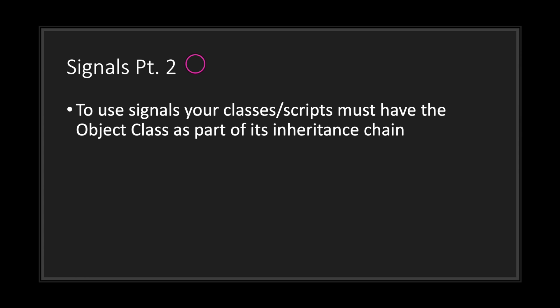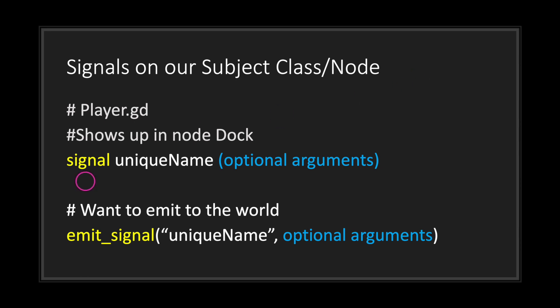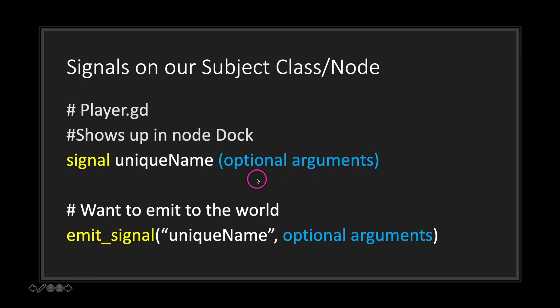If the object class is not part of your inheritance chain, you cannot use signals. Declaring a signal is simple: on the subject class, use the signal keyword followed by a unique name. Optionally, you can add parentheses with arguments, which will appear in the node doc in the Godot application — but this is optional. It's not strict, meaning it won't throw an error if you use more or fewer arguments when you emit the signal.